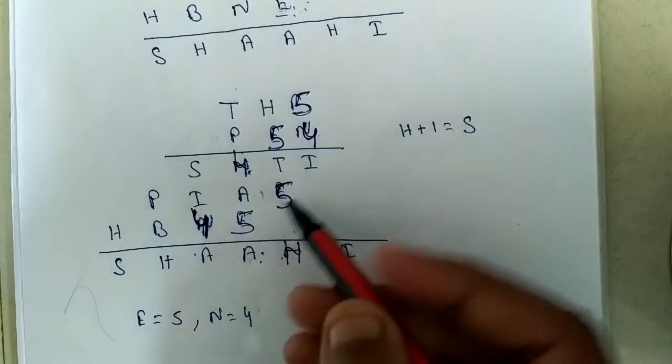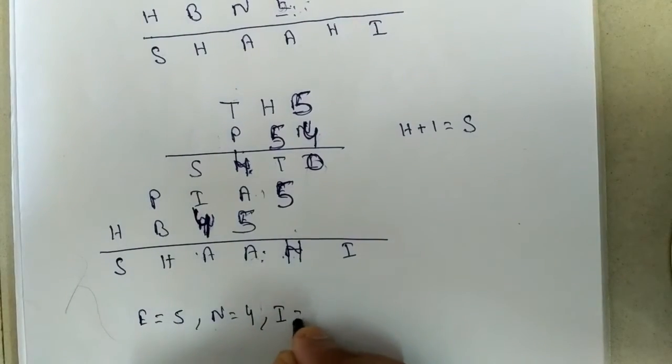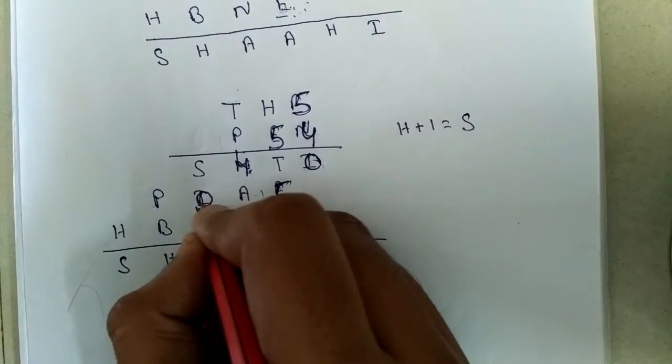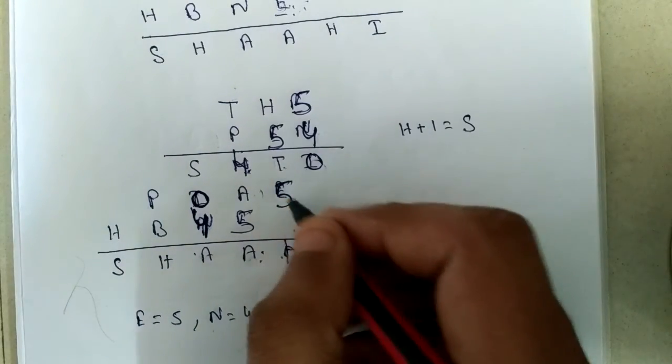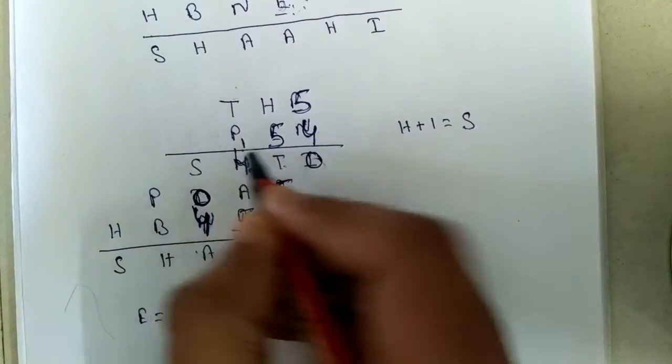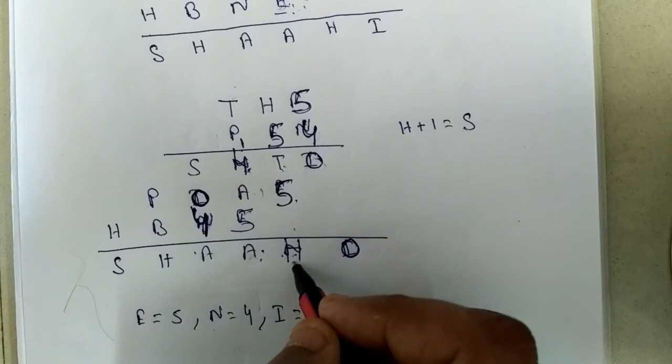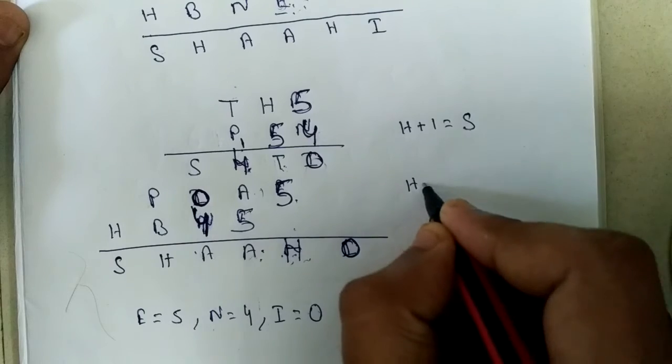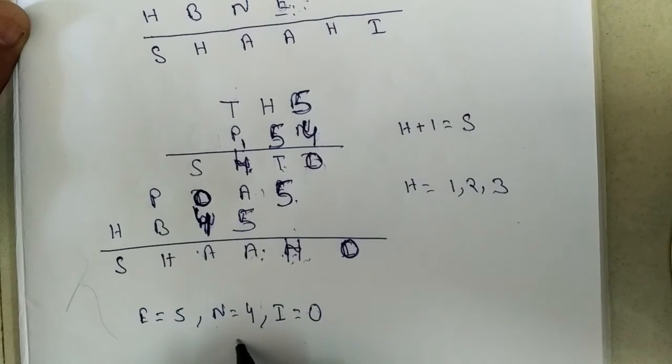T means I must be 0. Now T plus 5 equal to H. We are getting 1. Why? Here T must be greater than 5. H must be less than 5. So we have concluded H is either 1, 2, 3, because 0 is already occupied by I and N is already occupied by 4. But we are also seeing that H plus 1 equal to S. So if H equal to 3, S equal to 4, which is not possible. So H is either 1 or 2.